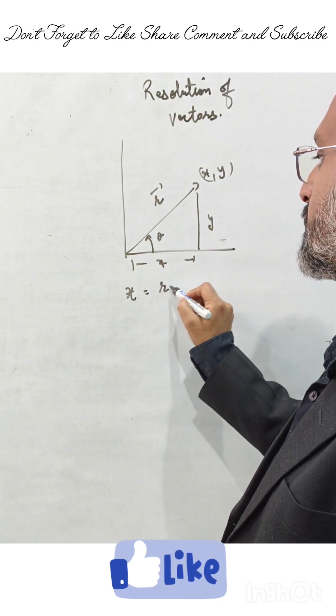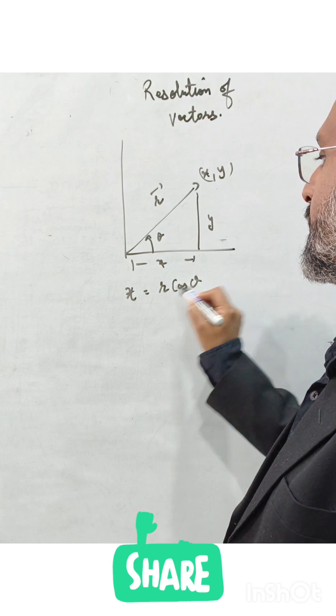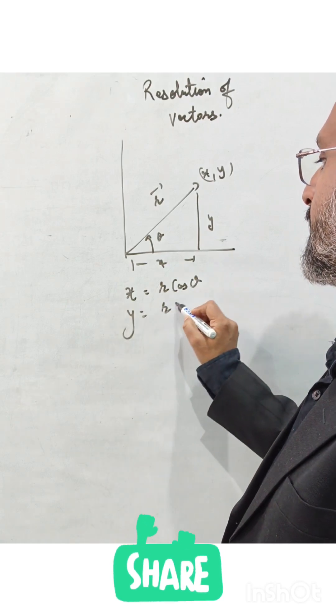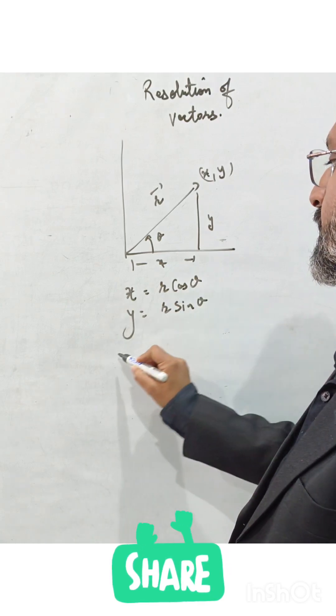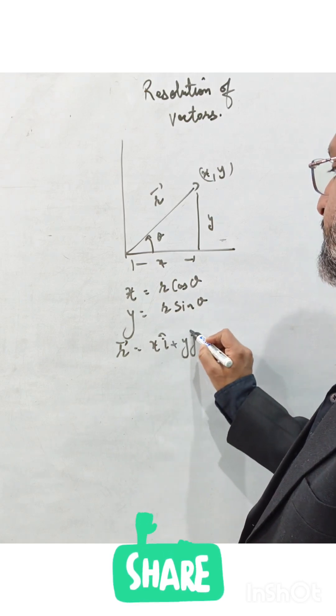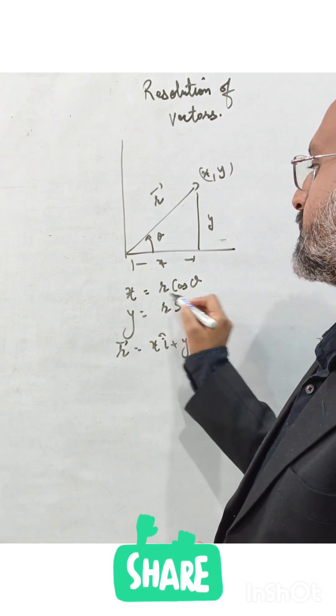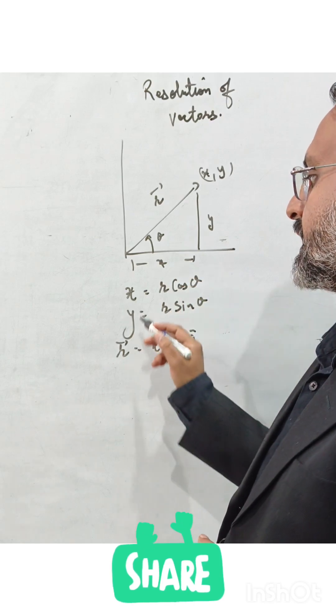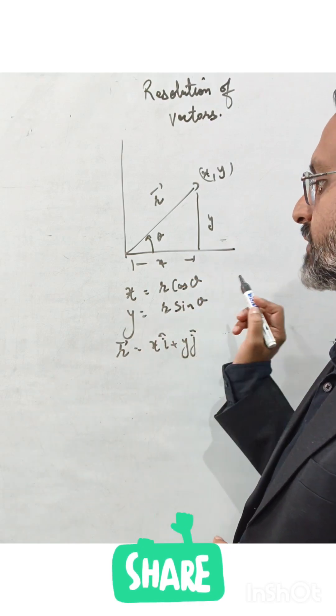Therefore, x equals r cos theta and y equals r sine theta, where r vector is x i cap plus y j cap. So x, or r cos theta, is known as the horizontal component, and y, or r sine theta, is known as the vertical component.